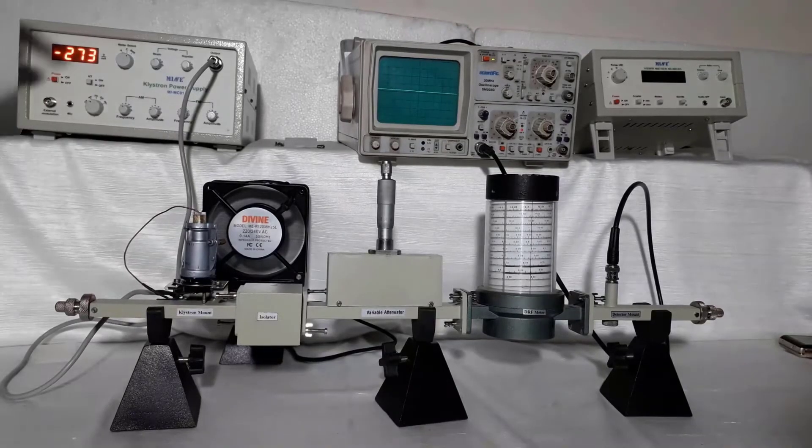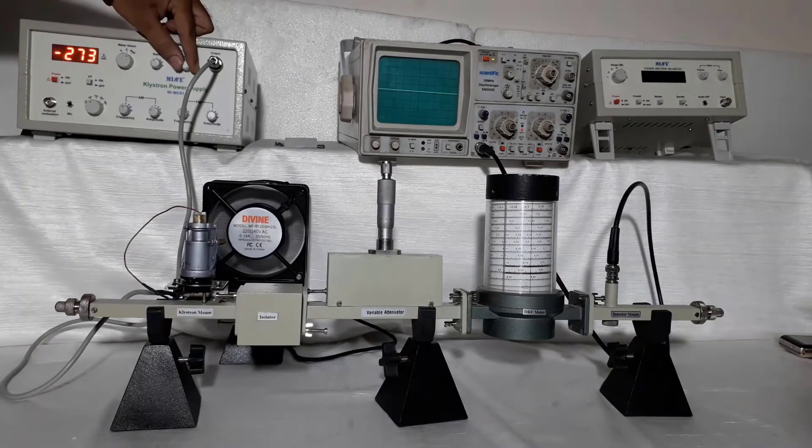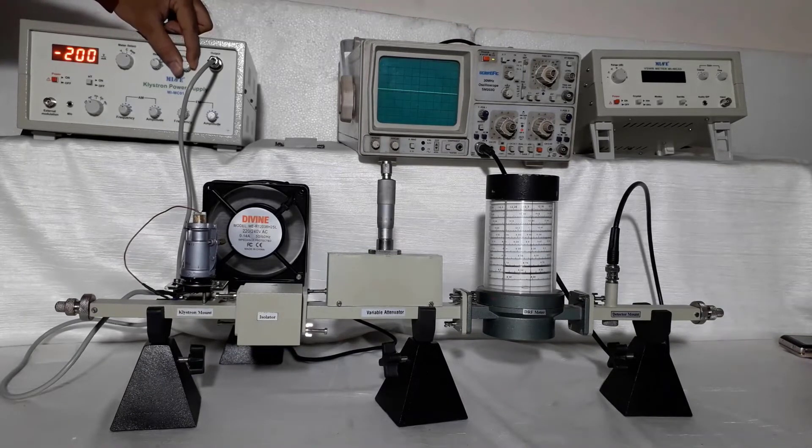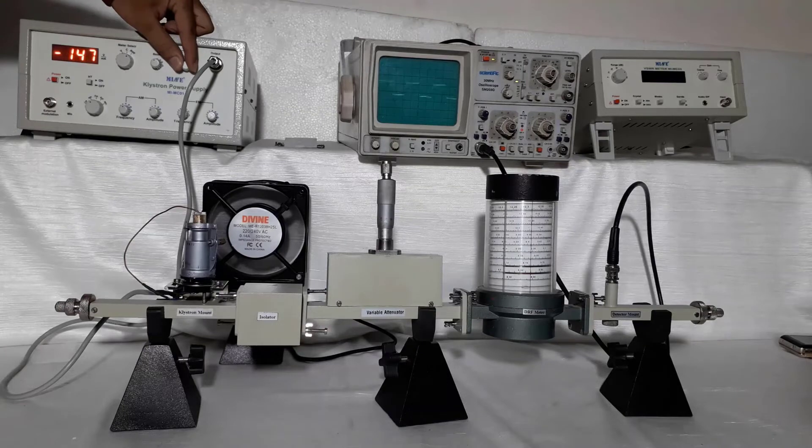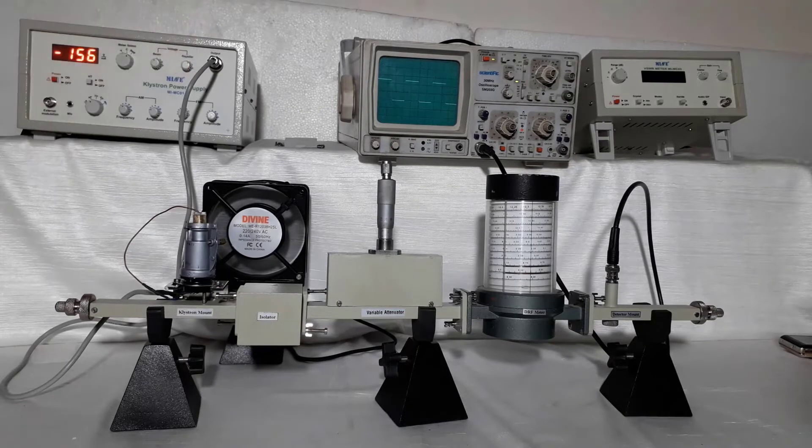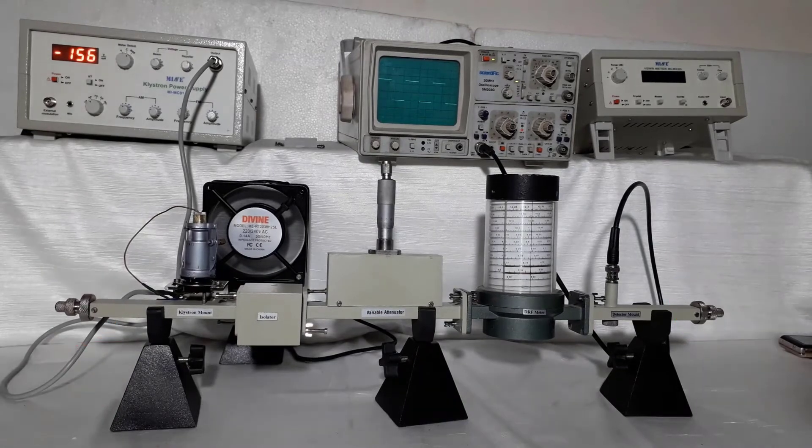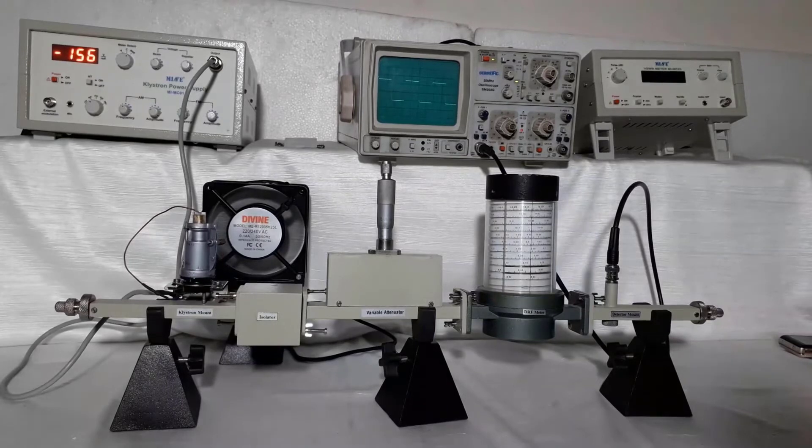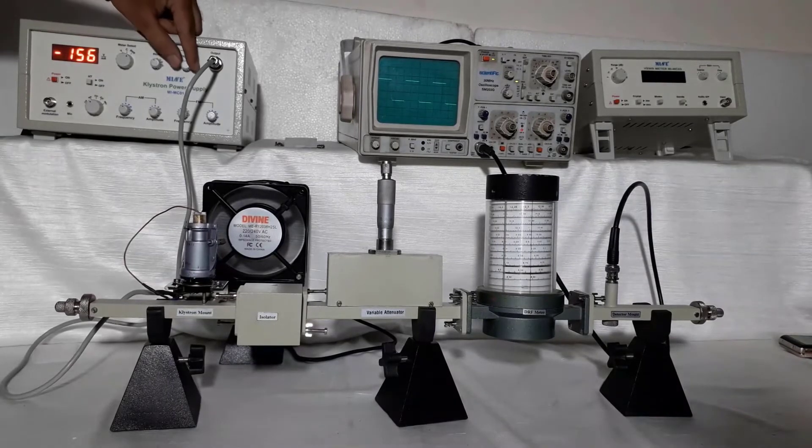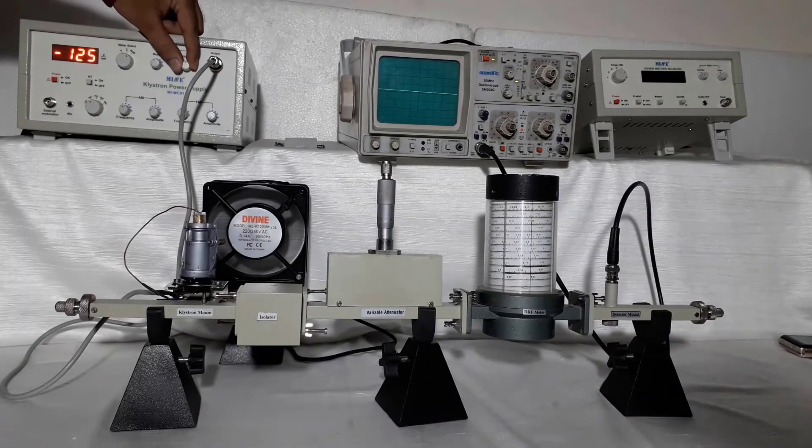Now by changing repeller voltage clockwise slowly, try to get a square waveform on CRO. You can also use plunger of klystron mount and detector mount for getting maximum output. You will observe that you will get square waveform two or three times in all over span of repeller voltage.